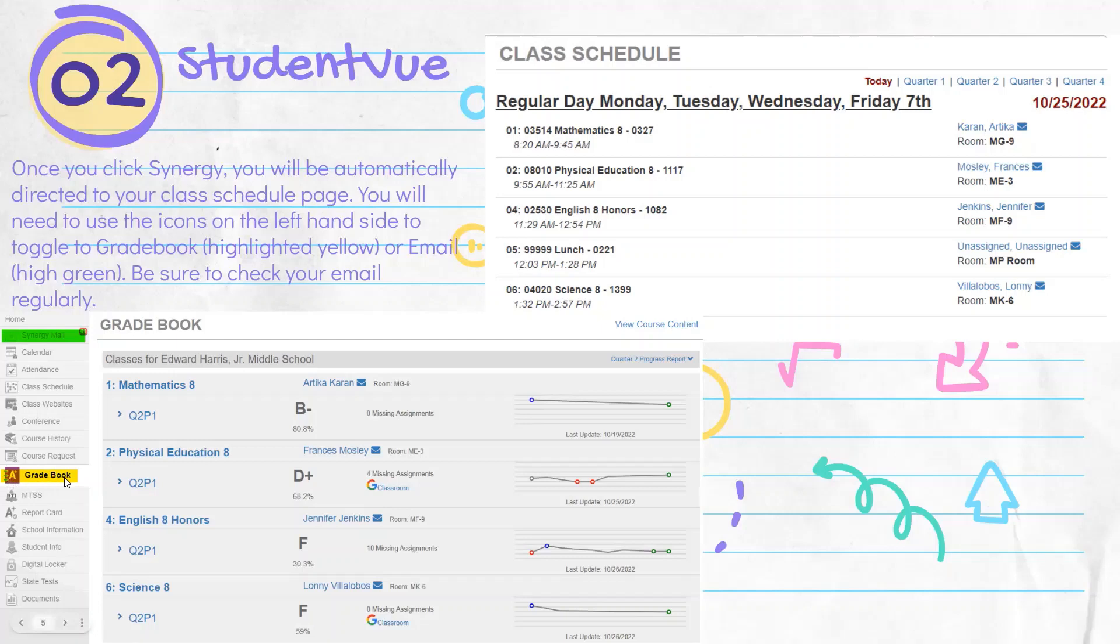But for today's activity, we're going to focus mostly on grade books. So you would click this highlighted yellow icon, and it will bring up a snapshot that looks like this. Make sure you're in your quarter two grade book.